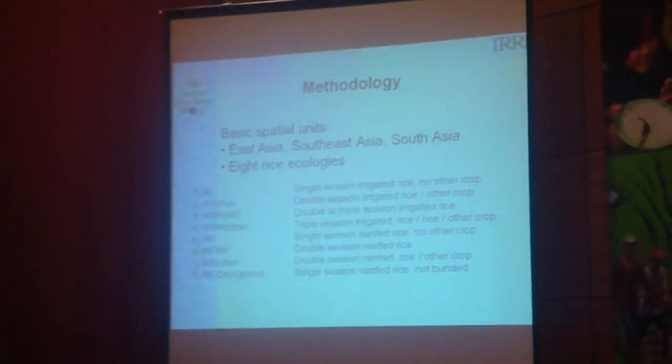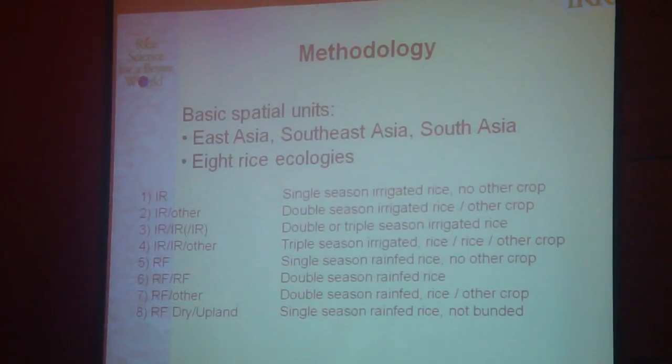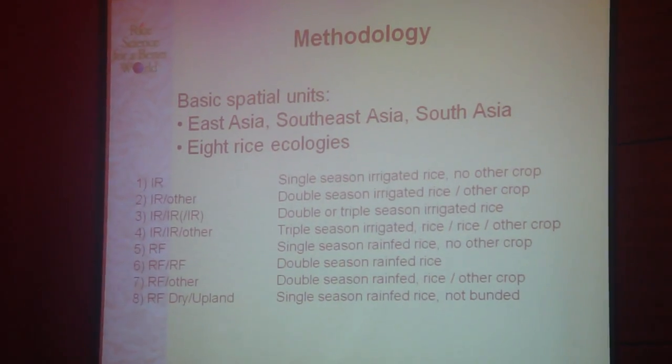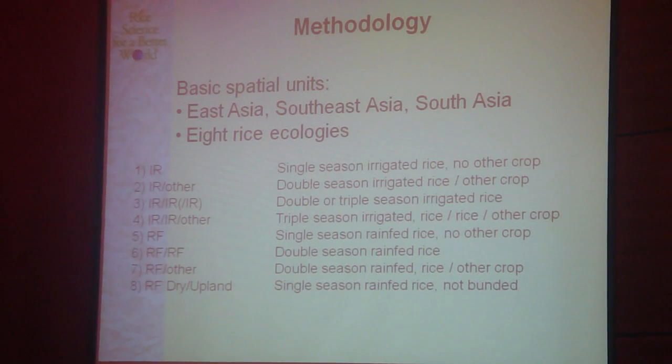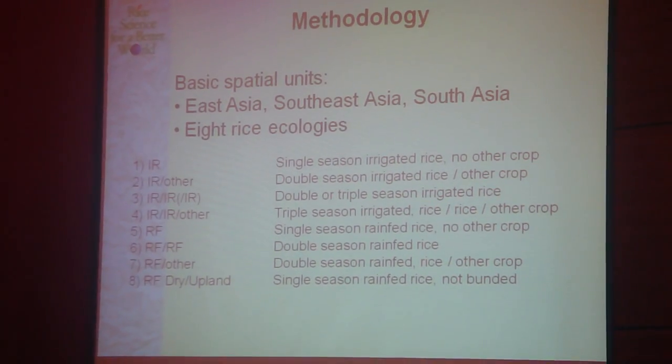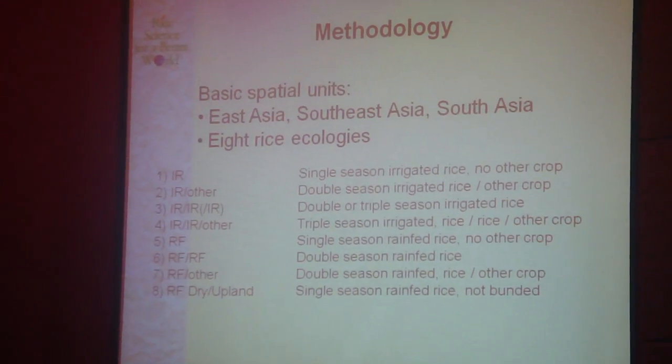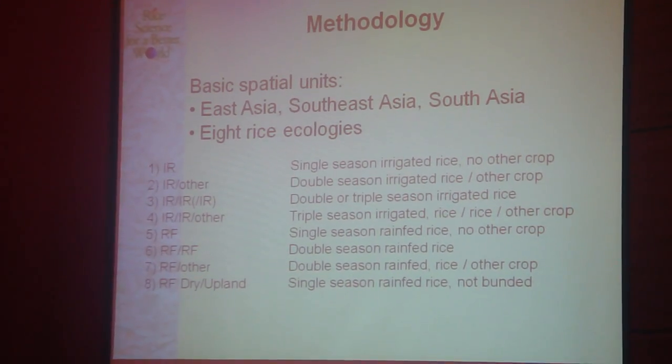In terms of spatial units, Andy Nelson explained that we have divided Asia into 220 units — too much detail to go through each one, so we take a bird's eye view of East Asia, Southeast Asia, and South Asia. Within them, we look at eight rice ecologies: four irrigated lowland ecologies, four rain-fed based ecologies, and one upland ecology. We look at single, double, and triple cropping of rice, and explicitly at non-rice crops — what we at IRRI like to call rice-based cropping systems.